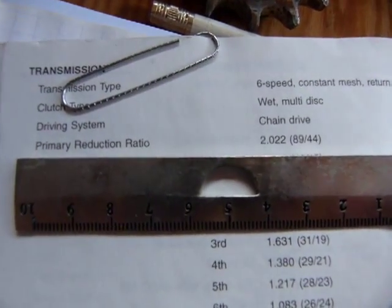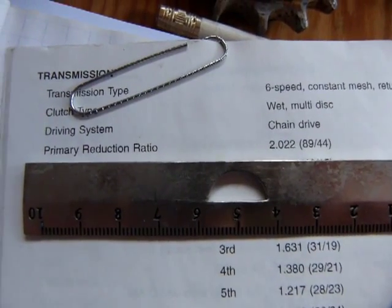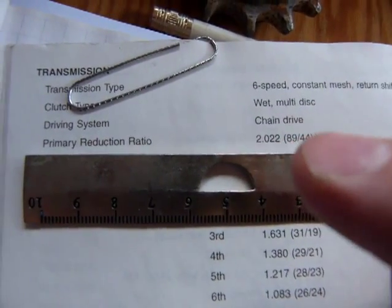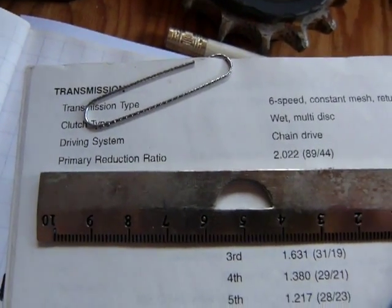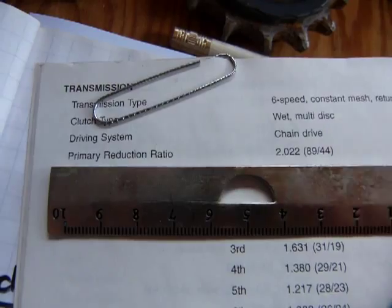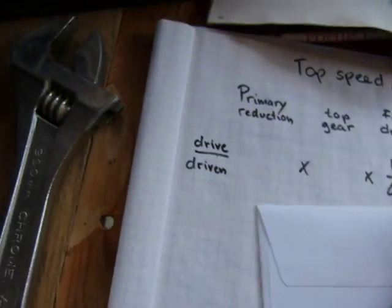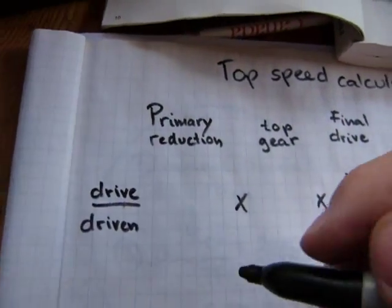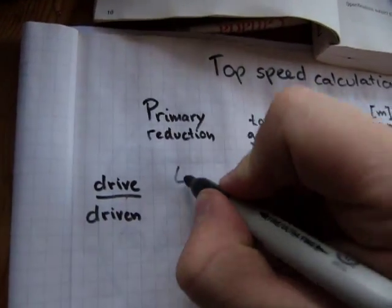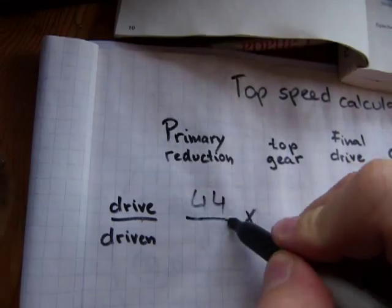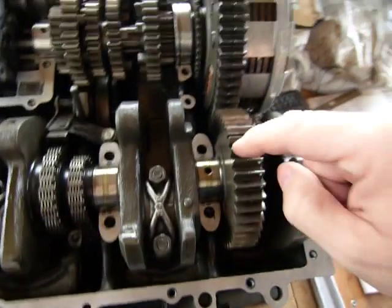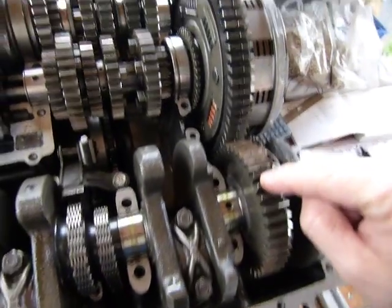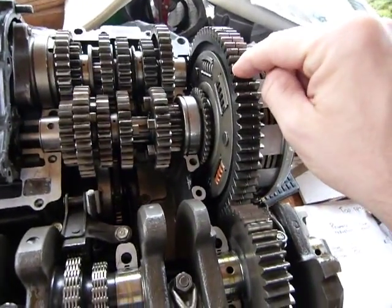And the primary drive is the number of teeth on this gear and the number of teeth on that gear. You don't have to take apart your engine to count the teeth on them, but you do need that number. And what do you know? In the manual, it is listed as primary drive or primary reduction ratio. And it says 89 over 44 and it's got a number 2.022. Don't use that in that order. Use 44 divided by 89.